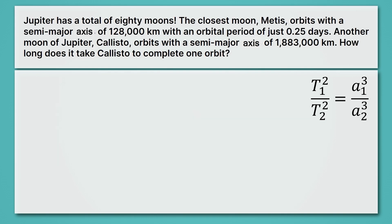Let's try another problem. These can be relatively tough. This reads, Jupiter has a total of 80 moons. The closest moon, Metis, orbits with a semi-major axis of 128,000 kilometers with an orbital period of just 0.25 days. So Metis is really close to Jupiter and goes around it really fast four times a day. Another moon of Jupiter, Callisto, orbits with a semi-major axis of 1,883,000 kilometers. How long does it take Callisto, which is farther away, to complete one orbit? So we're going to use what we know about Metis to figure out info about Callisto.